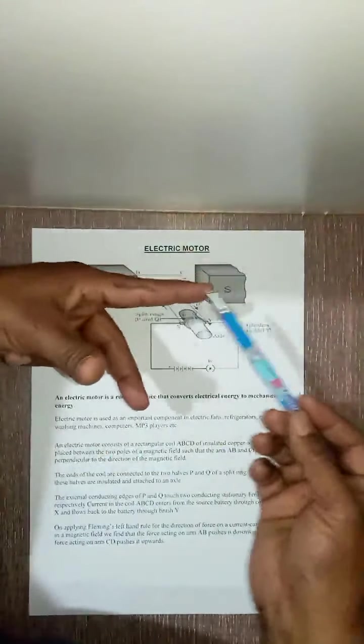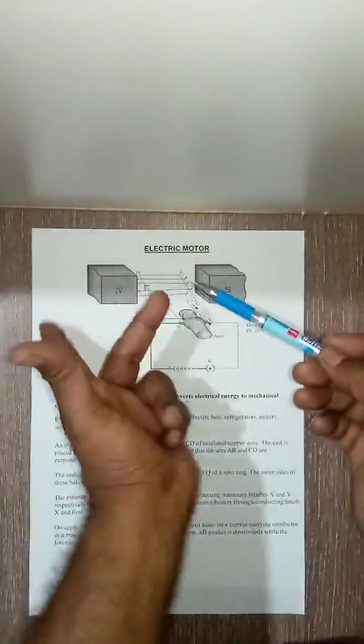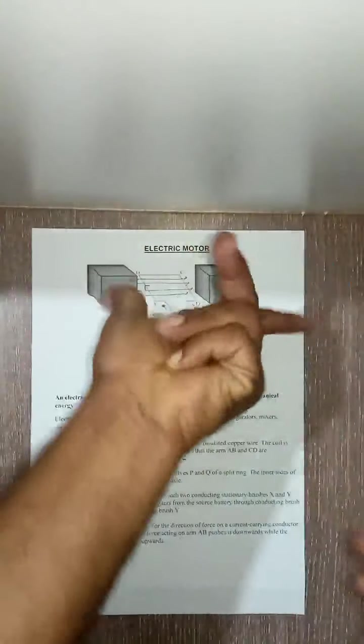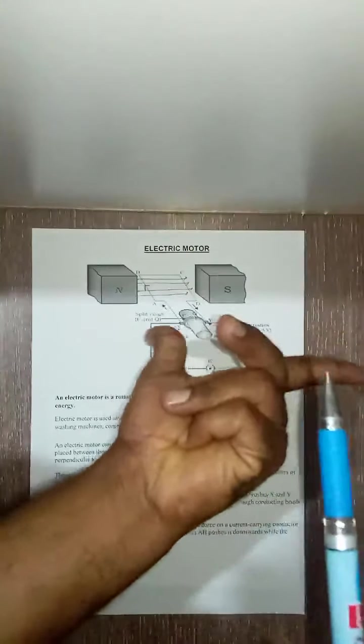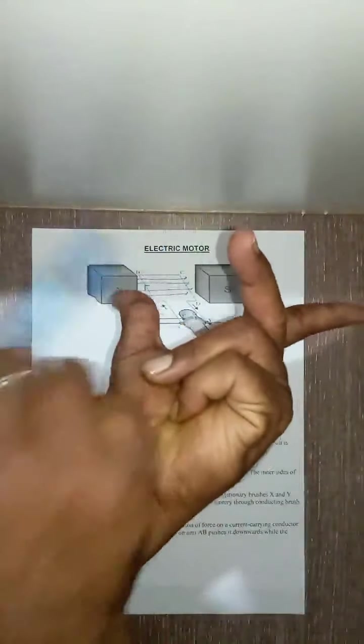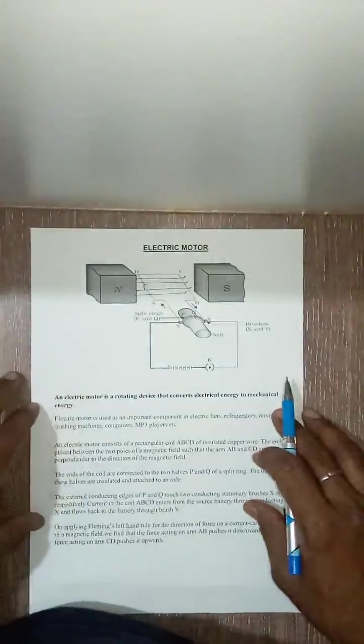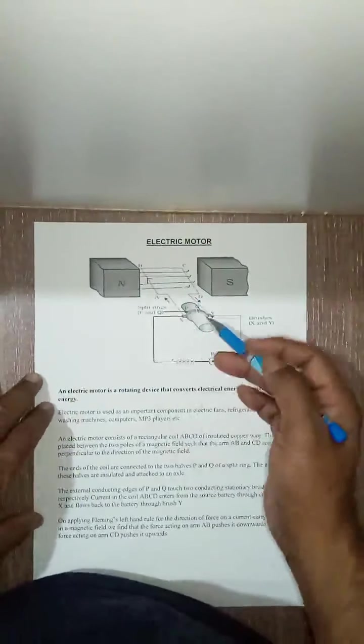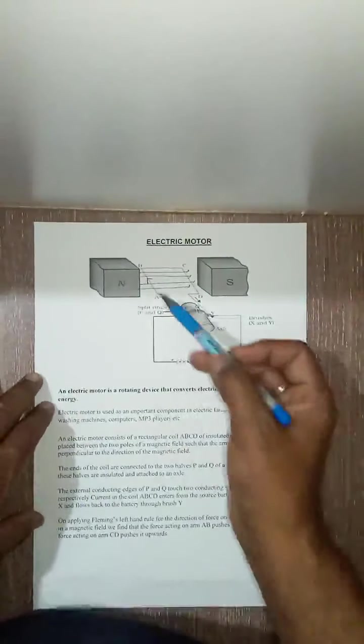So let me show you again field and the current. If I can show like that, I am trying my best to make you understand. Field line, current, and the force. Force is downward. So by Fleming's left hand rule we can confirm the direction of motion of this.